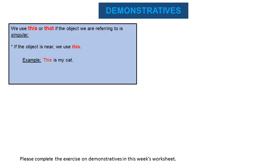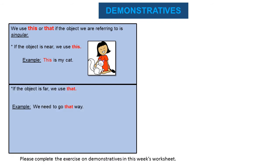When we are referring to a singular object, we use this or that. If the object is near, we use this. Example: this is my cat. If the object is far and singular, we use that. Example: we need to go that way.